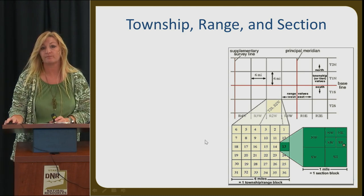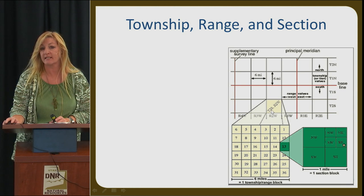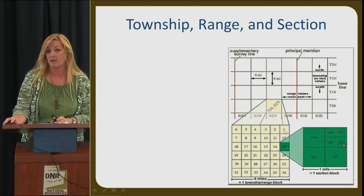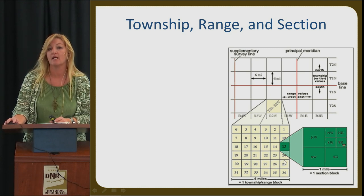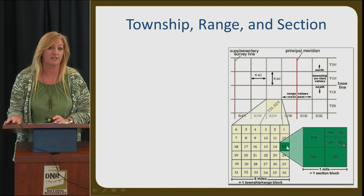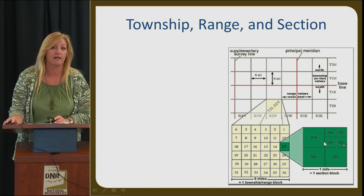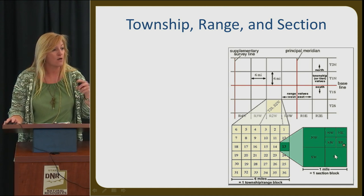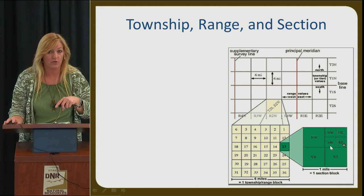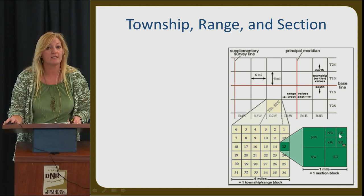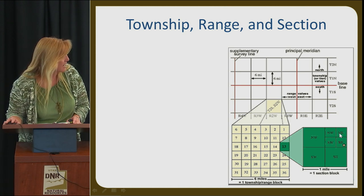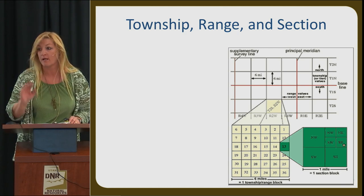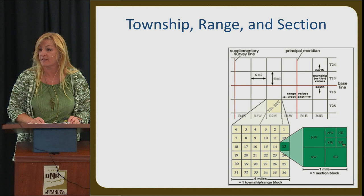Looking at this yellow box, this is a blow-up showing the 36 sections, from Section 1 all the way down to 36. We can break that down into quarter sections: for example, Section 13 breaks down into northeast, northwest, southwest, and southeast quarter sections. And each of those quarter sections can be further broken down into smaller quarter sections, which we refer to as 40-acre tracts. On your application, that's as small as you can go for your place of use.